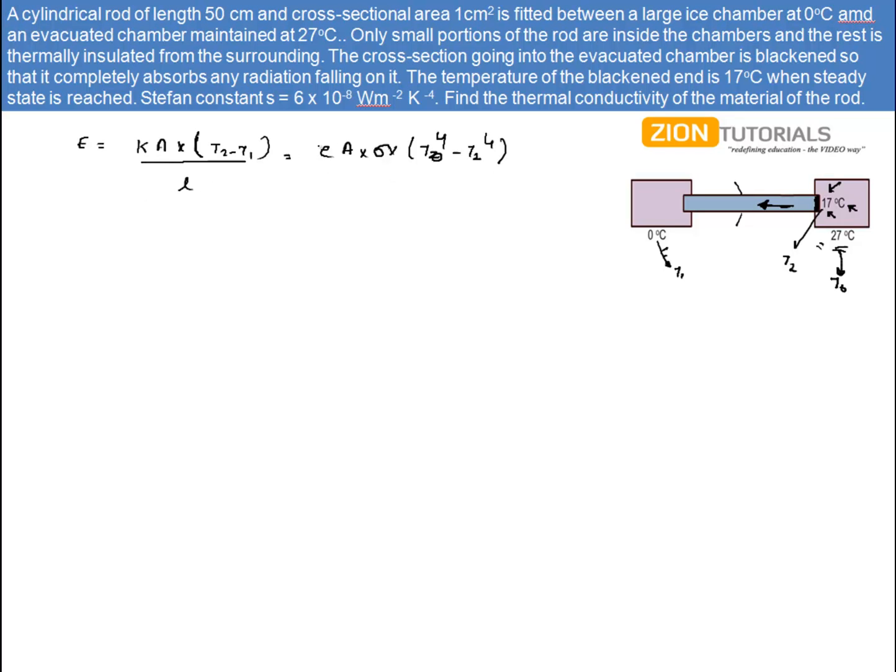Now I have all the values, just substitute them. Area of cross-section times K times T₂ is 17 minus 0, length is 50 centimeters or 0.5 meters.